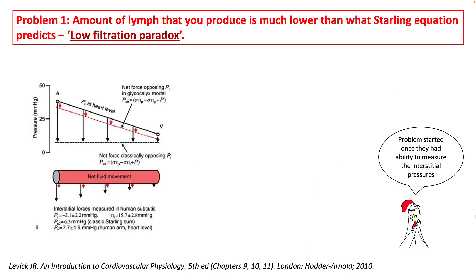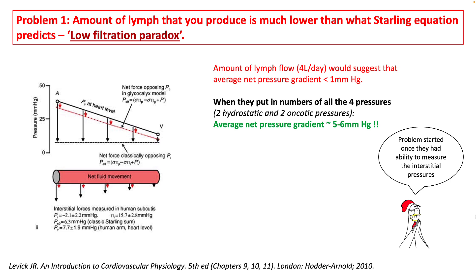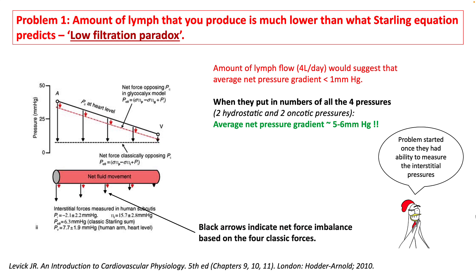The most important limitation was the low-filtration paradox. As time progressed, they figured out a way to measure these interstitial pressures. They found that the amount of lymph flow was around 4 liters per day, and that would suggest a net pressure gradient of less than 1 mmHg. However, when they put these numbers into the Starling Equation, the average net pressure gradient always came out to be 5–6 mmHg, which was much larger than expected — making lymphatic flow at least 10–20 times higher.